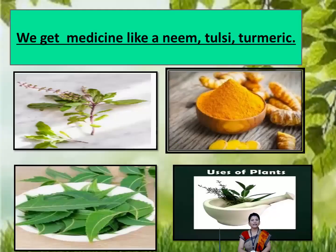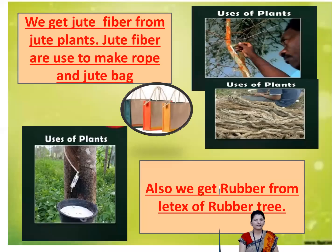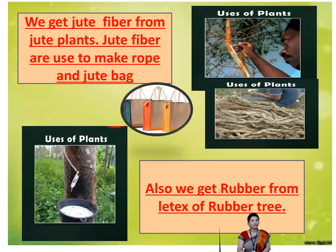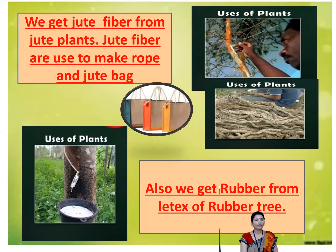We get medicine — like quinine, tulsi, and turmeric — from plants. We get jute fiber from the jute plant. Jute fiber is used to make rope and jute bags. Look at the picture — here are some bags made from plants. We also get rubber from the latex of the rubber plant.